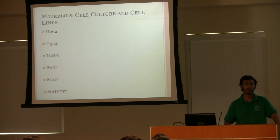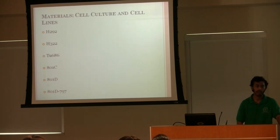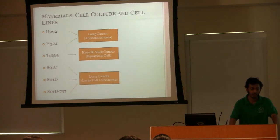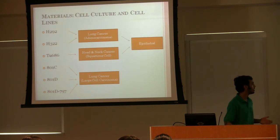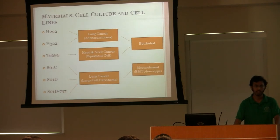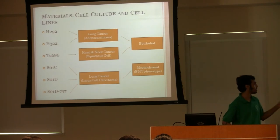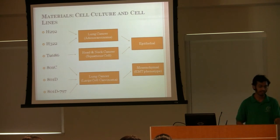In our research, we used a number of different cell lines, but the six that yielded the most significant amounts of data were the six shown here. The first two, H292 and H322, were actually lung cancer adenocarcinomas. TU686 was a head and neck cancer squamous cell carcinoma, while the last three, 801C, 801D, and 797, were basically lung cancer large cell carcinomas. Also of significance, the first three, H292, H322, and TU686, were epithelial cells with limited metastatic potential. While the last three were mesenchymal cells that showed an EMT phenotype and had a very high potential for metastasis. And 801C, 801D, and 797 had the most potential.